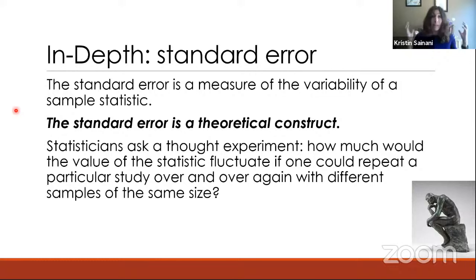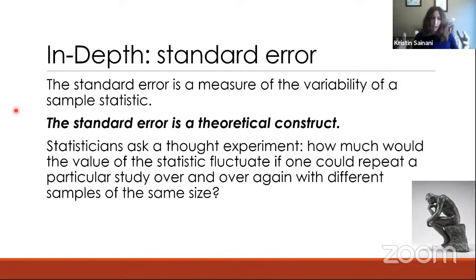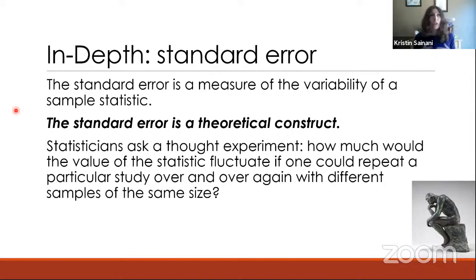The standard error is a completely theoretical construct. Statisticians think of it as a thought experiment: how much would the value of a statistic fluctuate if you could somehow repeat your study over and over again with different samples of the same size? If you could repeat the cherry juice trial with different samples of 20 male competitive distance runners many, many times and observe how much the difference in means bounces around from sample to sample, you would know how much uncertainty there was in your guess. Unfortunately, we don't have the resources to actually repeat experiments many times, so we figure out the standard error in a theoretical way using math or computer simulation.